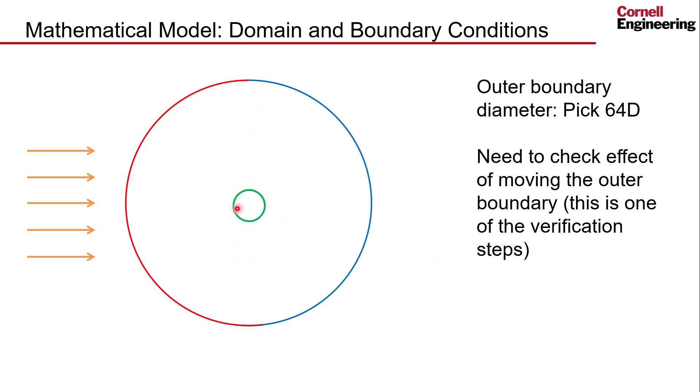The domain is the region between the cylinder and this outer boundary. At the cylinder, the fluid that is in contact with the cylinder will be at rest, so u equal to zero, v equal to zero is a boundary condition there.